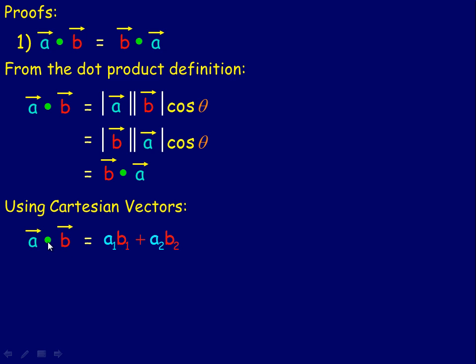Using Cartesian vectors, a dot b is a₁b₁ plus a₂b₂, product of two x components plus the product of two y components. In each of these products, we're multiplying two real numbers together.